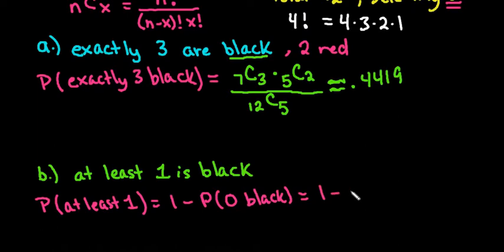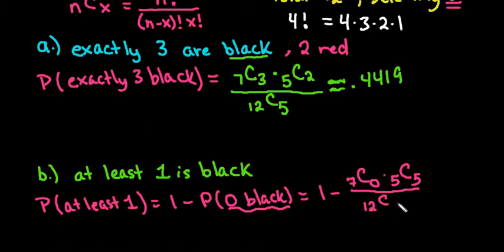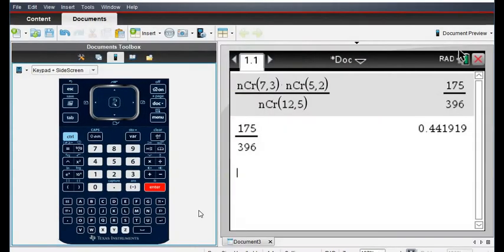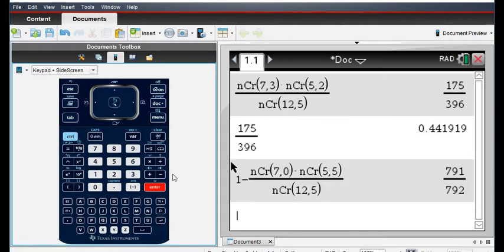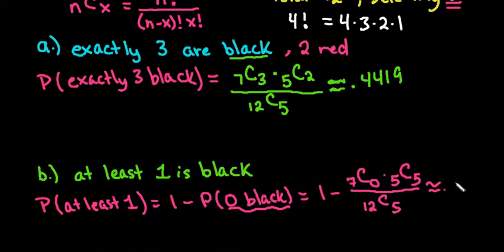We calculate: one minus C(7,0) — seven black ones taken zero at a time — times C(5,5) — five red ones taken five at a time — divided by C(12,5). In the calculator, I'll reuse the previous expression, editing the values: five things taken five at a time, and seven things taken zero at a time. Using Control+Enter gives approximately 0.9987, meaning there is a 99.87% probability of selecting at least one black button.